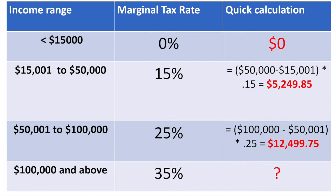Similarly, for the third bracket from $50,001 to $100,000, the marginal rate of tax is 25%, meaning any income you earn in this range is taxed at that rate. If you earn more than $100,000, the tax you owe on this portion of your income is equal to 25% of the difference between $100,000 and $50,001, which is approximately $12,499.75.